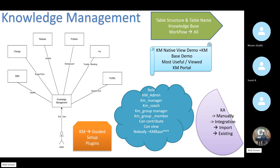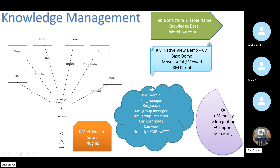In Change management, knowledge articles work as supporting documents. In Release, we update information — like when you go to the Apple Store or Google Play Store and update WhatsApp or Outlook, there are a few lines mentioning new updates: security issues fixed, bugs fixed, performance increased. Those are release documentation. In Problem management, we note down the workaround — that's where we use knowledge management.